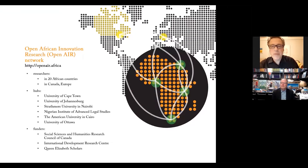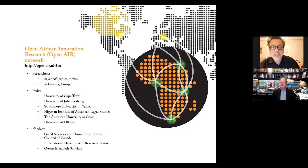To tell you a little bit more about the Open African Innovation Research Network that I'm part of — if you want to find out more and read about some of the research the network has done, you can go to the URL provided in the slide. We have researchers in 20 African countries and also researchers in Canada and Europe. We have institutional hubs at the University of Cape Town, University of Johannesburg, Strathmore University in Nairobi, Nigerian Institute of Advanced Legal Studies, the American University of Cairo, and the University of Ottawa. You can see on the screen who our funding comes from.